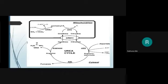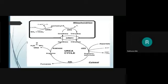Oxaloacetate then needs a nitrogen group. Glutamate acts as the nitrogen donor — oxaloacetate accepts nitrogen from glutamate and is converted into aspartate, while glutamate itself becomes alpha-ketoglutarate. The enzyme involved is transaminase. So aspartate is ultimately regenerated from fumarate and re-enters the cycle.